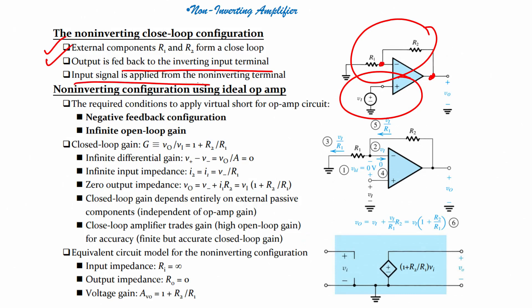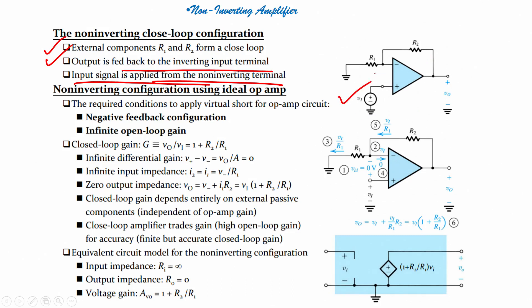The three key points of the non-inverting closed-loop configuration are: first, R1 and R2 form a closed loop; second, the inverting input is grounded and output is fed to the inverting input; third, the input signal is applied to the non-inverting terminal. For the ideal op-amp configuration, the conditions required to apply virtual short are negative feedback and infinite open-loop gain. The closed loop gain G equals VO/VI = 1 + R2/R1.